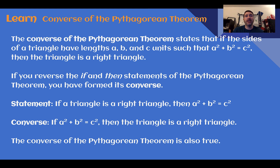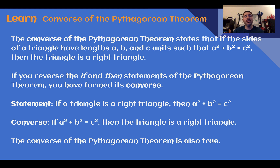So in the original Pythagorean Theorem, it says: if a triangle is a right triangle, then a squared plus b squared equals c squared. For the Converse: if a squared plus b squared equals c squared, then the triangle is a right triangle.